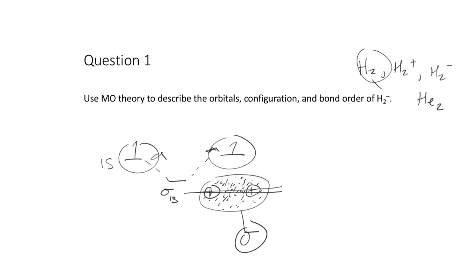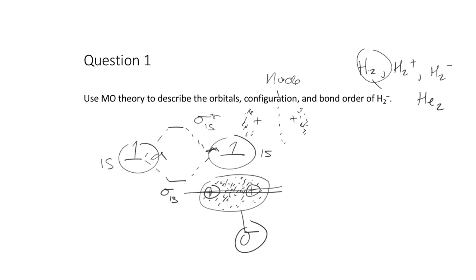The greatest probability of finding this electron is in between the two nuclei. This is what we call a sigma bond, made from the 1s atomic orbitals — the 1s of one atom and the 1s of the other. We could also imagine an empty antibonding orbital that would maximally put electrons away from the nuclear axis, with a node — a point of zero probability — in the middle.